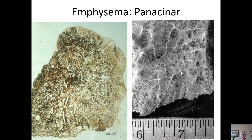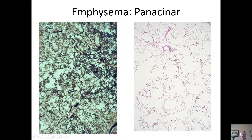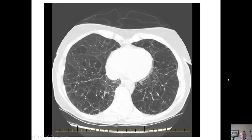By contrast, panacinar or panlobular emphysema is the type seen prototypically with alpha-1 antitrypsin disease. Unlike centrilobular emphysema, it is seen predominantly in the lower lobe, and when one looks at higher magnification, the destruction is present throughout the lobule — panlobular or panacinar emphysema. On this microscopic section, the destruction present in the center of the lobule is similar to that present in the periphery. On this chest radiograph, there is a similar degree of destruction present throughout the lobule — the radiological equivalent of panlobular emphysema.